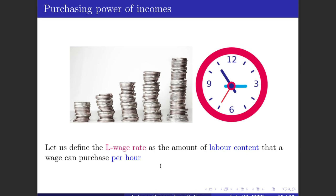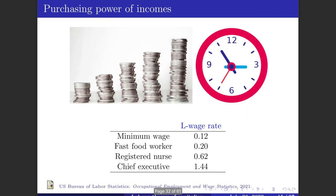Let's define wage rates in terms of labor content you can purchase, using US data. For one hour of minimum wage work, you can purchase about 0.12 hours of labor content — meaning if you work 100 hours at minimum wage, you can buy back about 12 hours of labor content. A fast food worker working 100 hours gets back about 20 hours; a registered nurse gets about 62 hours. By contrast, a chief executive gets about 144 hours back — implying a net transfer of labor towards the upper classes.